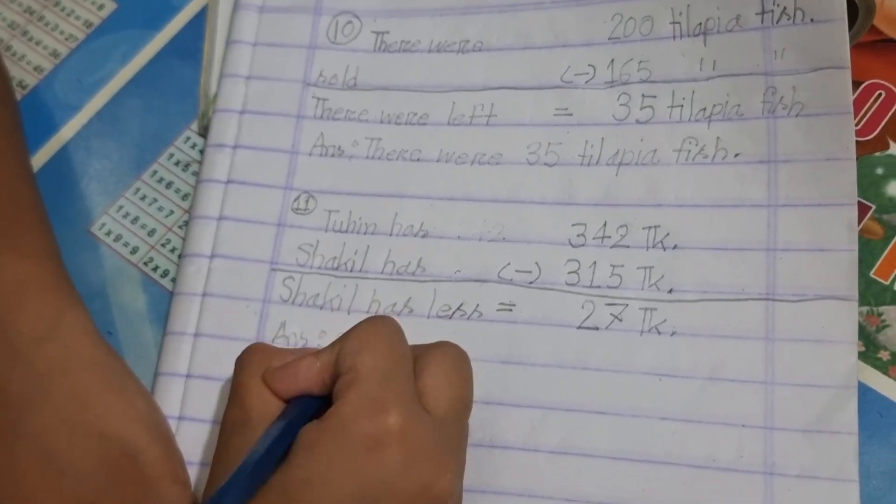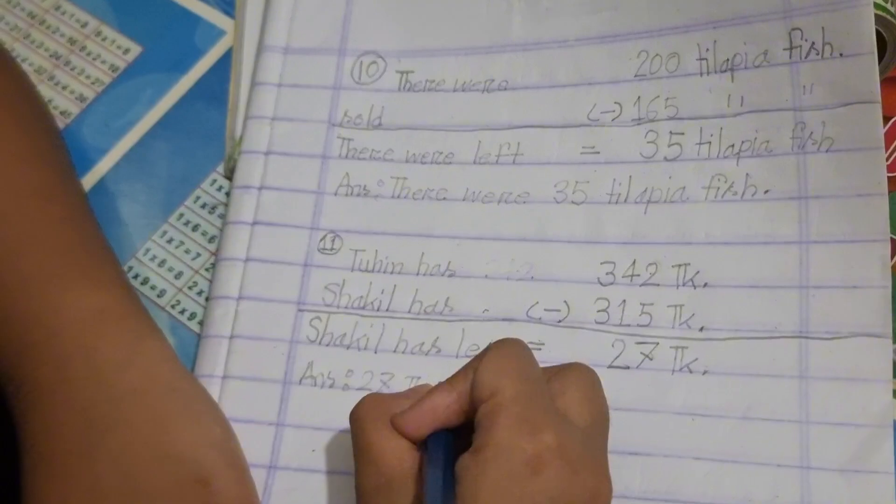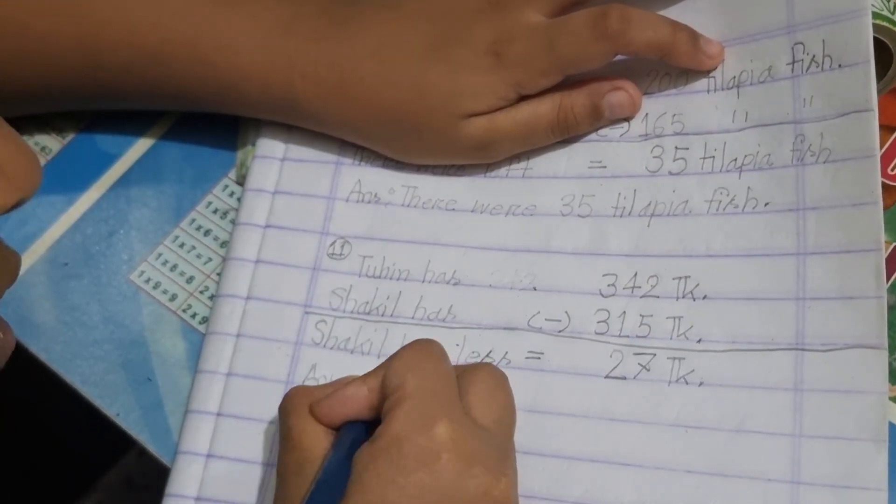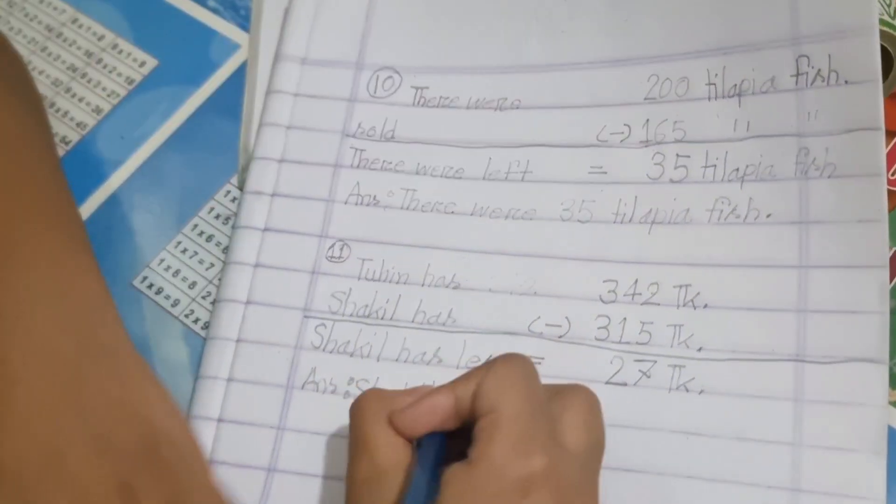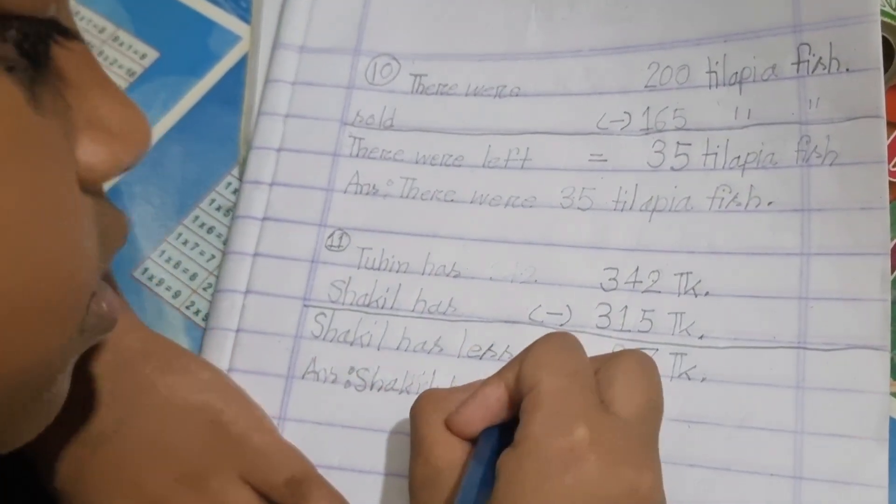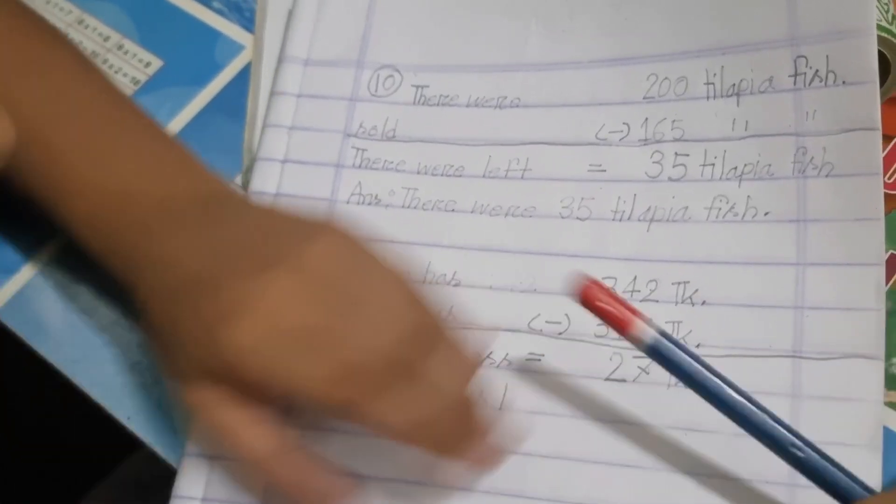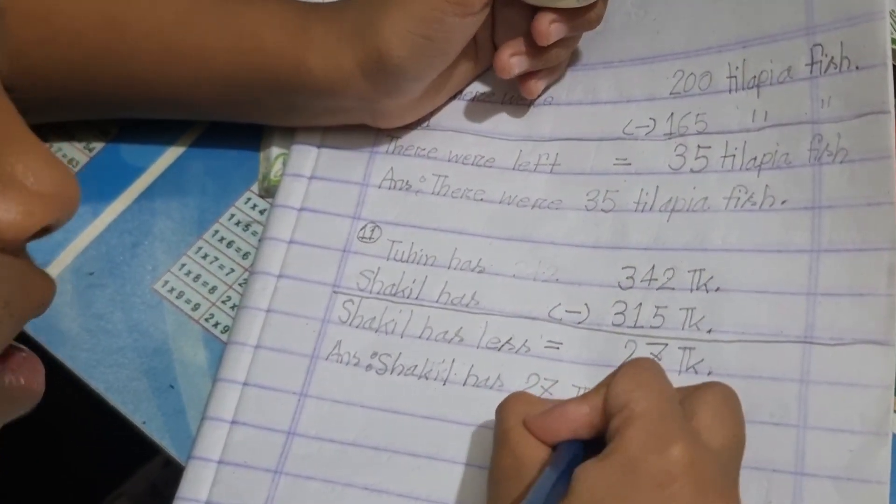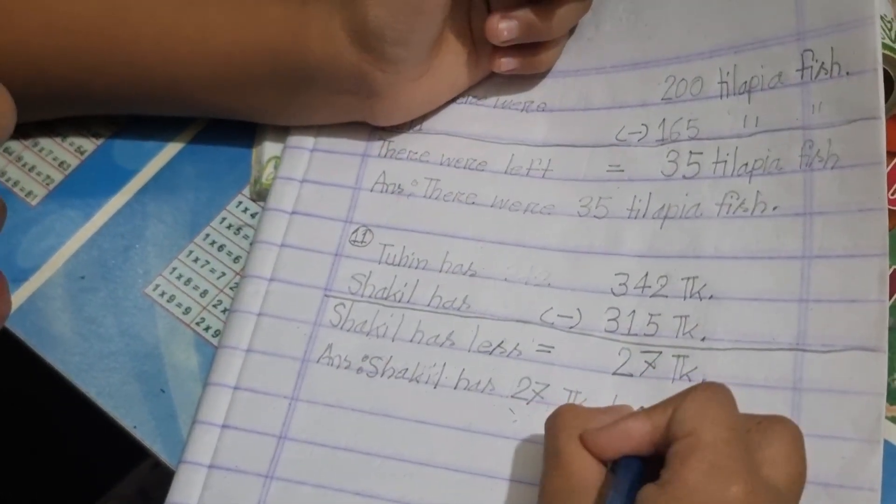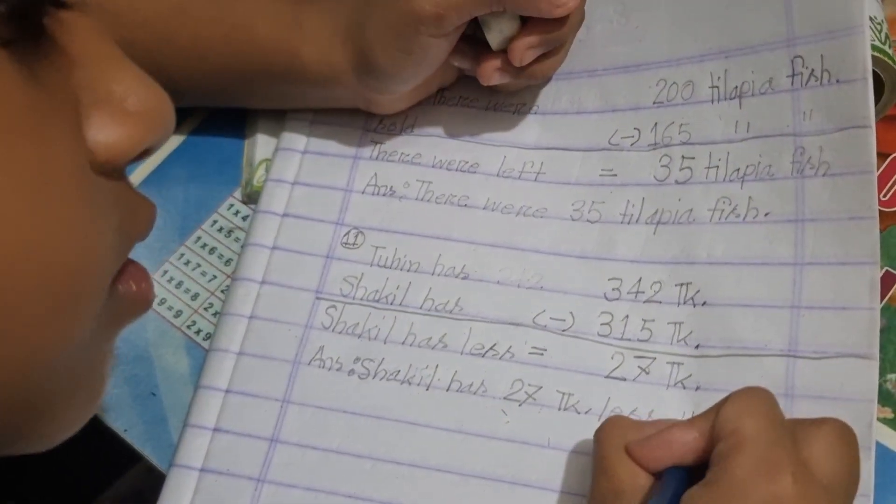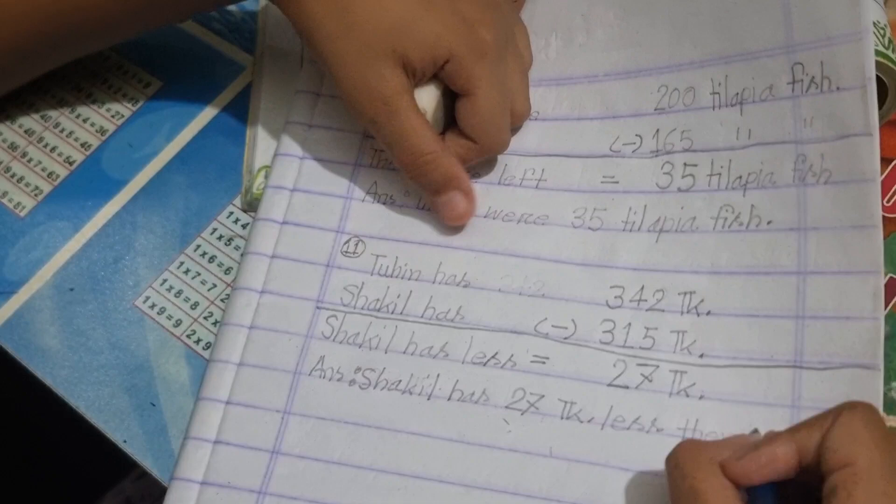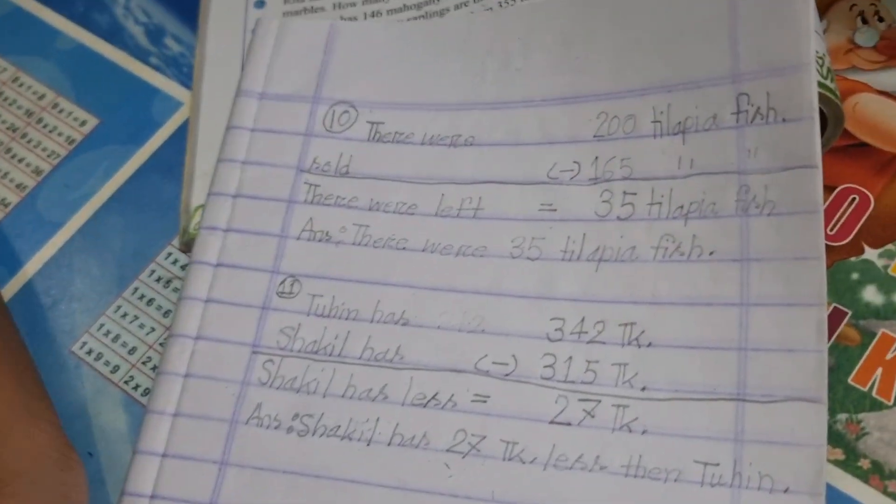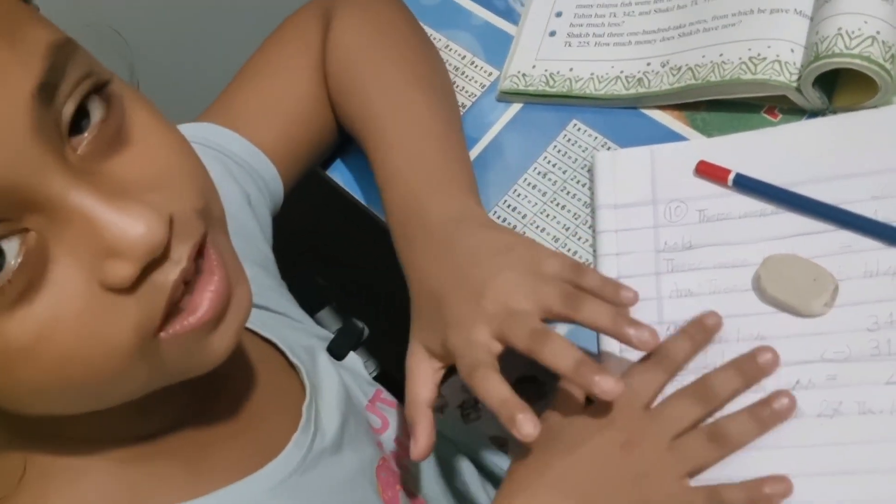The answer is 27 Taka. Shaqeel has 27 Taka less than Tuhin. Okay, so today's word problems are done. Bye bye!